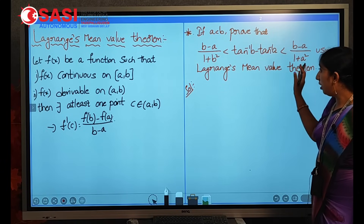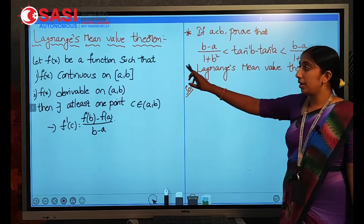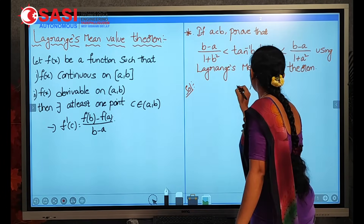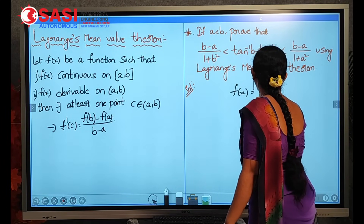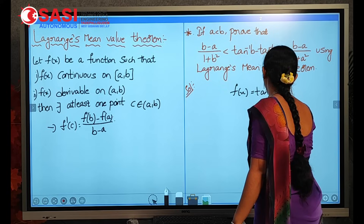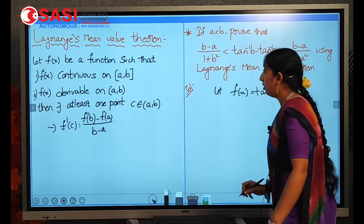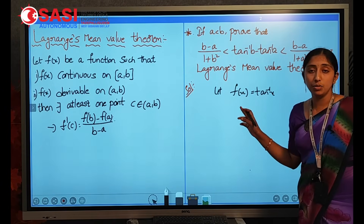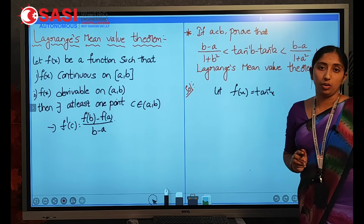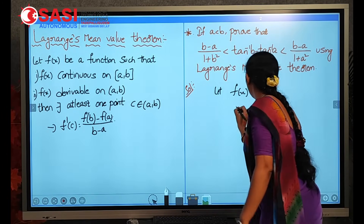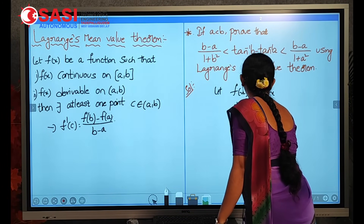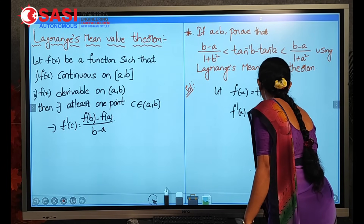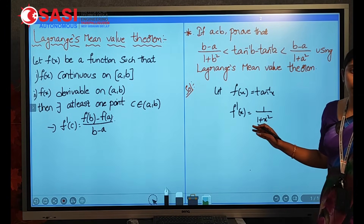For this, by using Lagrange's Mean Value Theorem, first you have to consider a function f of x. According to this problem, let f(x) = tan⁻¹x. This f(x) should be continuous — and tan⁻¹x is clearly a continuous function. It should also be derivable: f'(x) = 1/(1 + x²). So it is continuous and derivable.